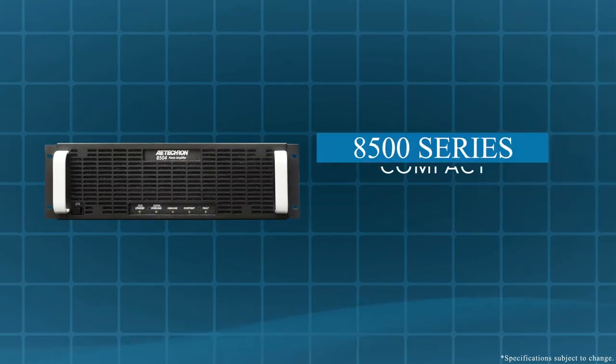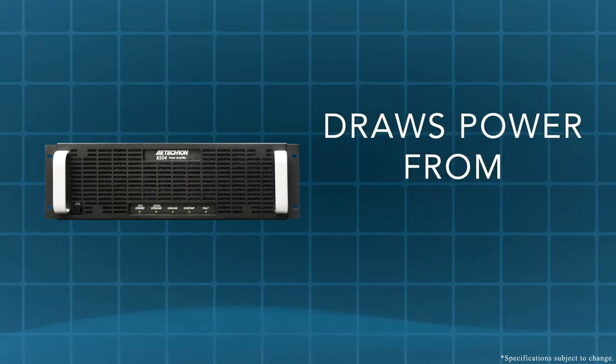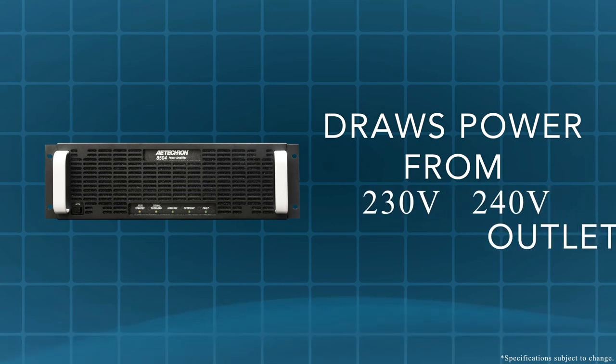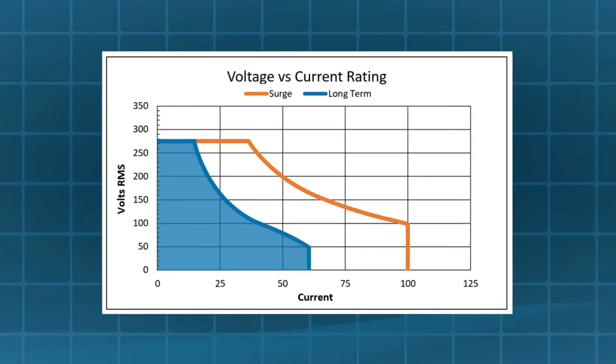The 8500 series is compact and powerful. In its smallest benchtop form, the 8504 is only 3U tall and draws AC mains power from a single-phase 230 volt, 240 volt outlet. Even at this small size, it will provide 4 kilowatts of long-term power and bursts of up to 10 kilowatts into resistive loads.